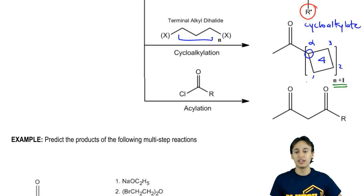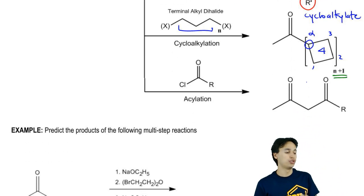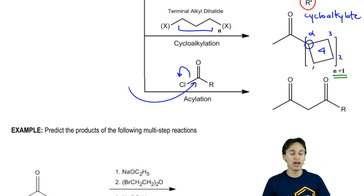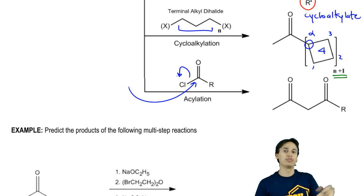Finally, this one's easy, acylation. You know that you could attack here, kick out the Cl, and you would get an acyl group after you do your H3O plus and your heat.